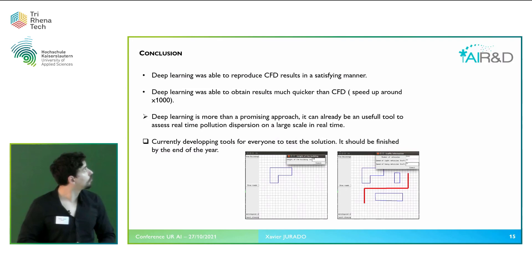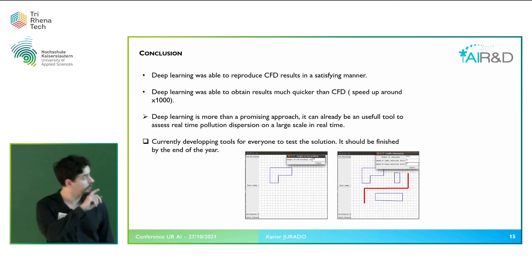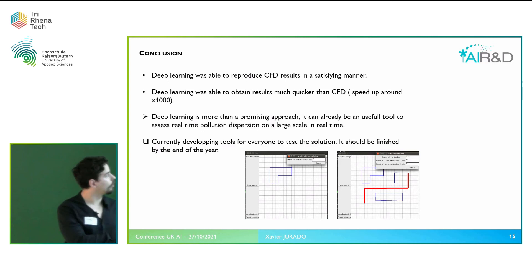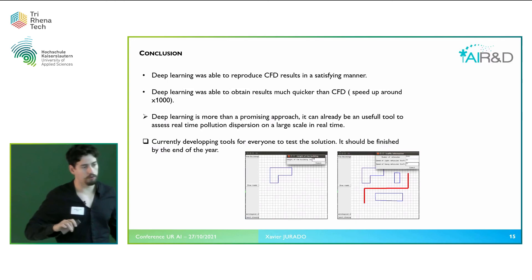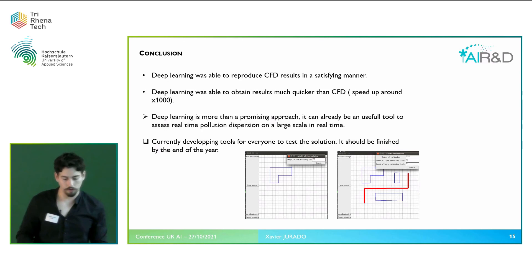To conclude, the deep learning approach is more than a promising approach — it is already a tool that can be used in real life to predict pollution exposure of pedestrians on a large scale, as I showed. It is indeed actually being used in real time in the South Pacific games with real-time data. I am also currently developing tools for everyone to test the solution, enabling people to rapidly test my model — you can draw buildings, give the height of the building, draw the road, give the number of vehicles and their speed, and then you will have the pollution dispersion result.